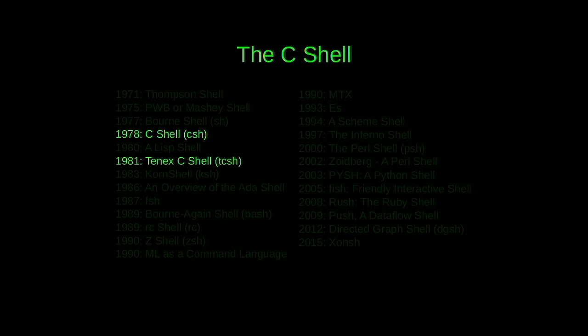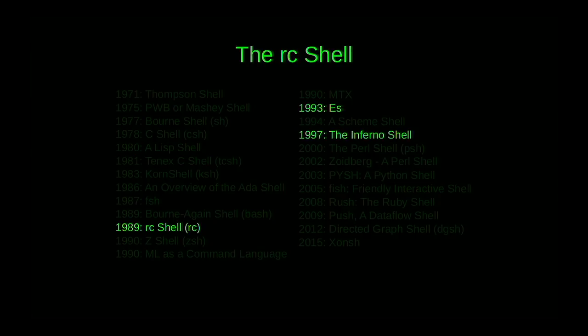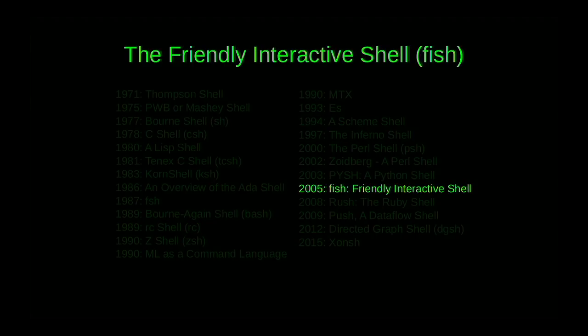There's the C shell and the TC shell. There's the RC shell family — RC was developed for Plan 9, and the ES shell is an open source re-implementation of RC. Continuing that lineage through Plan 9 or Inferno gives you the Inferno shell, though at that point we're sort of out of Unix territory. And then the last of the four groups is the fish shell, which is kind of a group unto itself. As its name suggests, it's focused on improving the interactive aspects of the shell and making it more friendly.